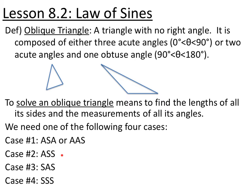Or you have angle-side-side, so an angle and then the two following sides. Case 3 is two sides and the included angle, so side-angle-side. Case 4 is you know all three sides but no angle. In this section, 8.2, we're going to cover cases 1 and 2: angle-side-angle, angle-angle-side, and angle-side-side.